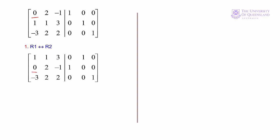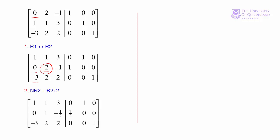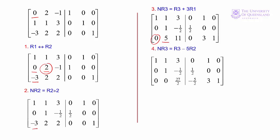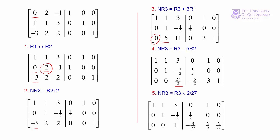We already have a 0 in the 2,1 position. Next, we get a 1 in the 2,2 position or a 0 in the 3,1 position. We divide row 2 by 2, also carrying out these operations on the right-hand side. Then we get a 0 in the 1,3 position by adding 3 times row 1 to row 3. We tackle the 3,2 position by subtracting 5 times row 2, keeping the 0 in the 3,1 position. Our next step is to get a 1 in the 3,3 position by multiplying row 3 by 2/27.